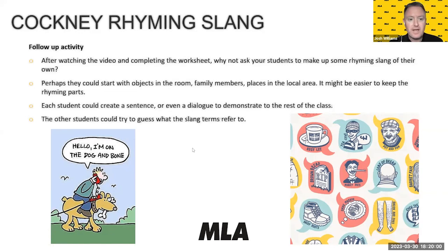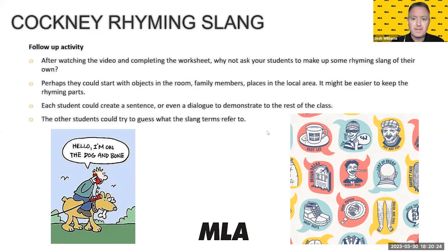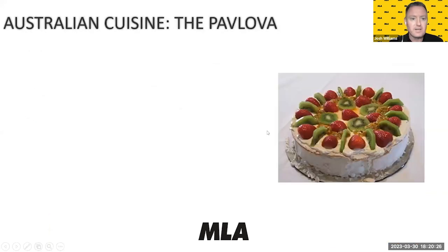You'll notice from the pictures there: 'I'm on the dog and bone' — the phone. That's something my friends say; it's quite common in Australia. I think it might have its origins in the fact that Australia was founded by convicts who often came from London, so quite possibly they brought it with them. It's a really good fun thing that students could start to research.